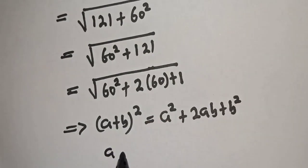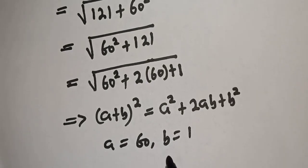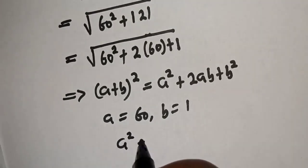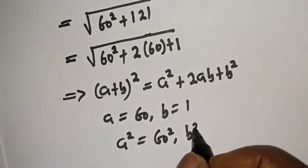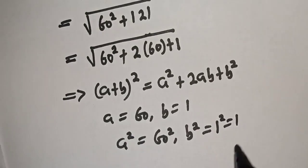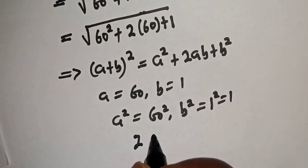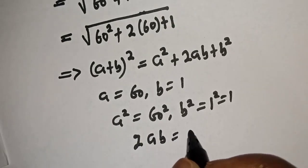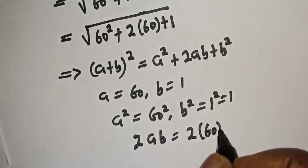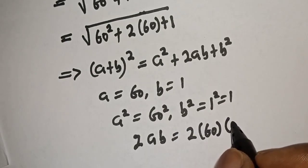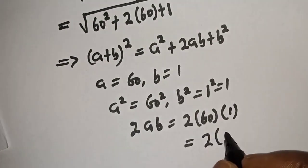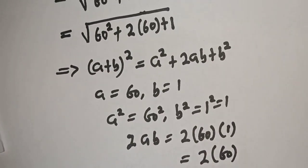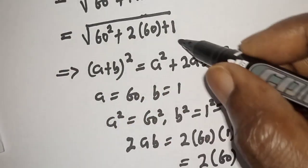From here, a is equal to 60 and b is equal to 1. Then a squared equals 60 squared, b squared equals 1 squared which is 1, and 2ab equals 2 multiplied by 60 multiplied by 1, which is 2 multiplied by 60, giving 120. Comparing all of these terms confirms the match.